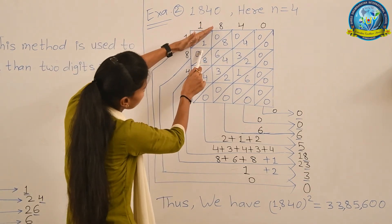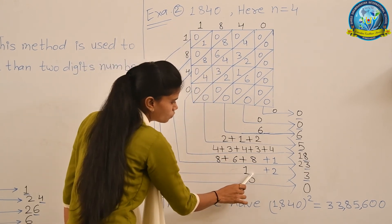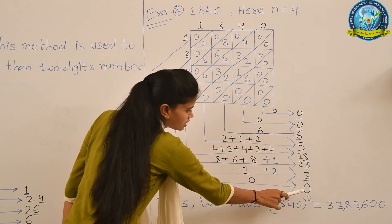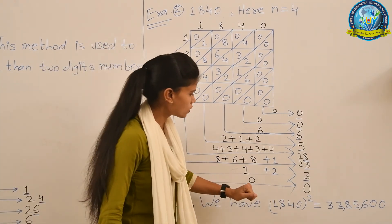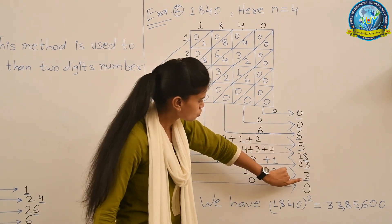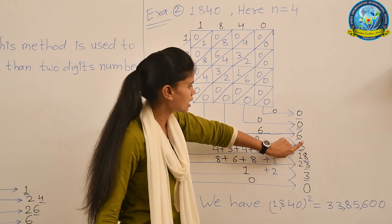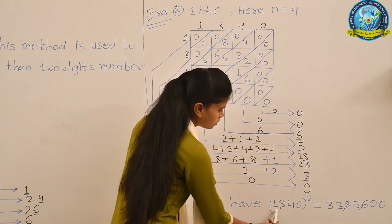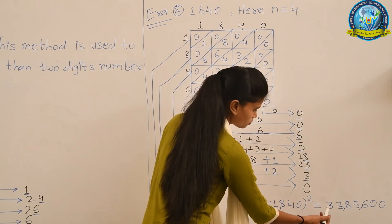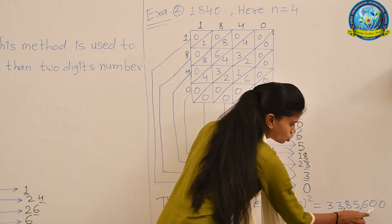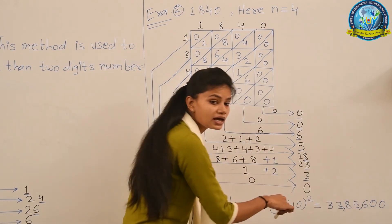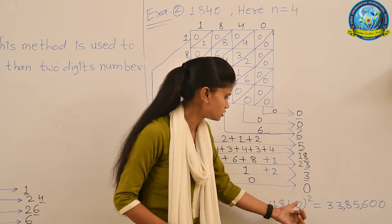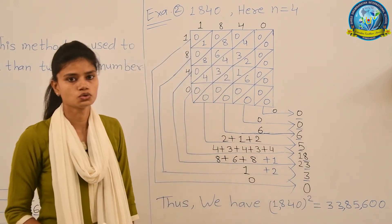The next column has only 1, plus carry-forward 2: 1+2=3. The last portion has 0, which we write but do not consider as a leading digit. Reading the underlined digits: 3, 3, 8, 5, 6, 0, 0. The trailing zeros count because they come after the significant digits. Thus, 1840² = 3,385,600. Thank you.